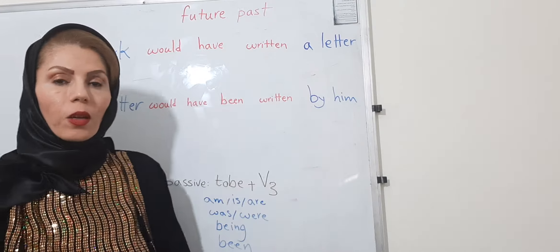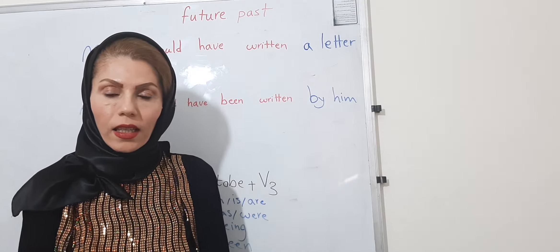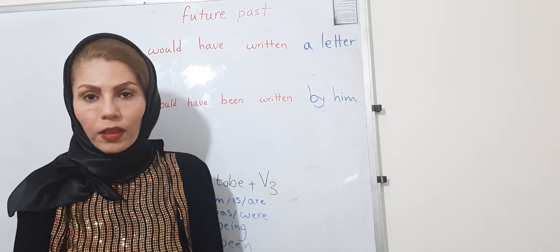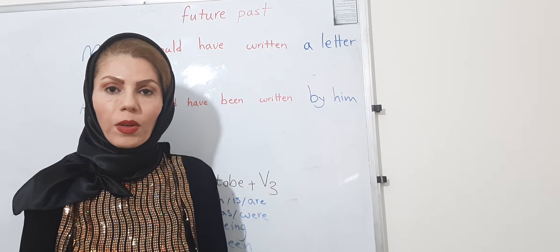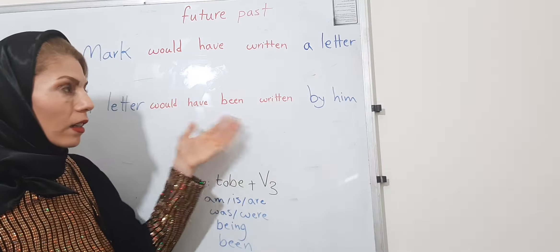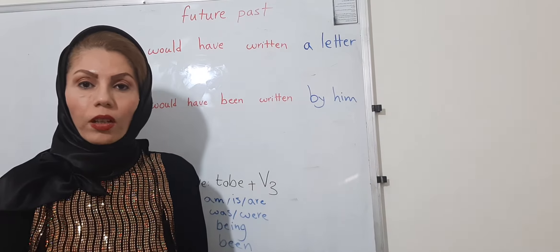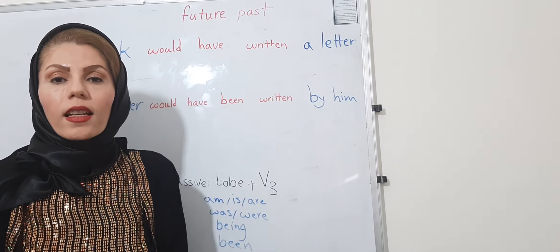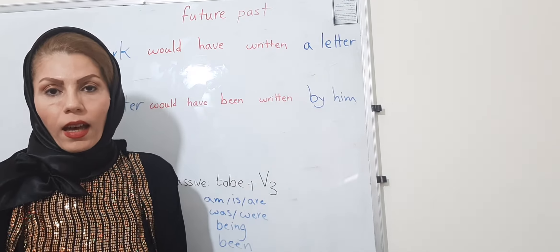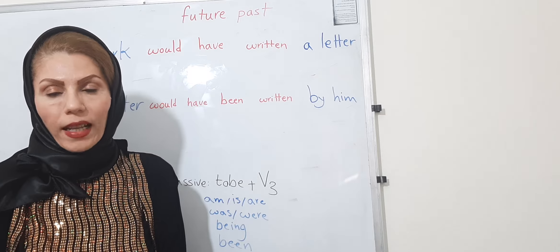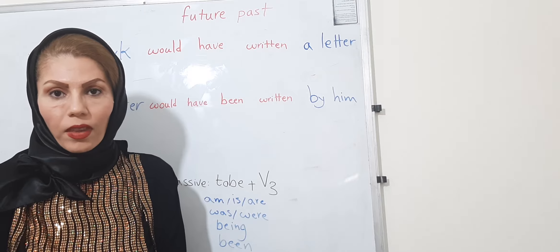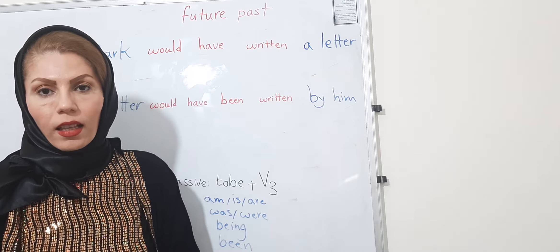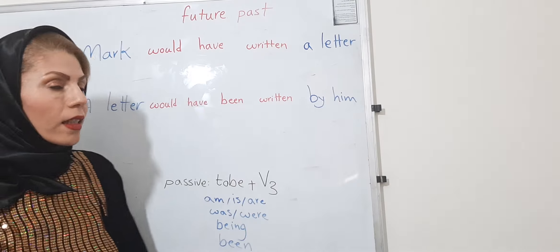It shows future past, and because you use 'have plus past participle,' it means that one is perfect. This is about 10 sessions speaking about these rules. As you know, there are 16 tenses in English, but just 10 of them have passive voices — six of them cannot be made passive.